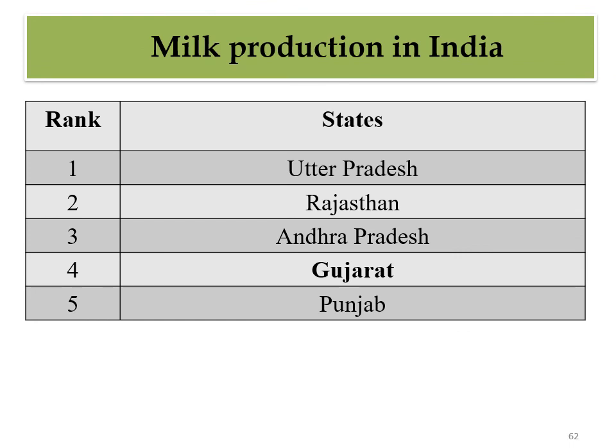The top milk producing states in India are: first Uttar Pradesh, second Rajasthan, third Andhra Pradesh, fourth Gujarat, and fifth Punjab. Remember this for exams - the first ranked state in milk production is Uttar Pradesh, while Gujarat comes fourth.